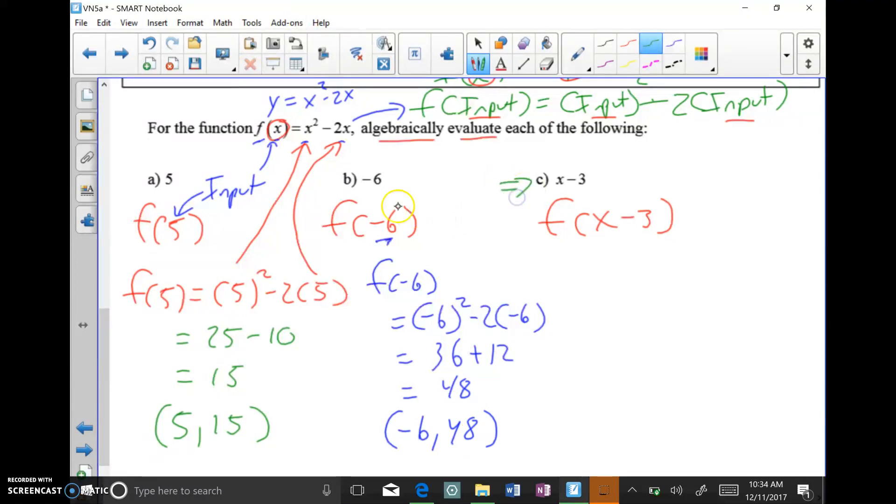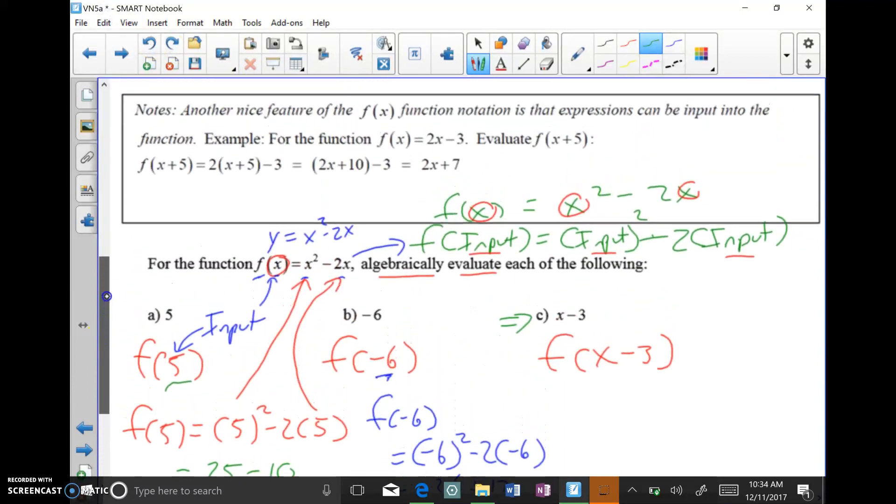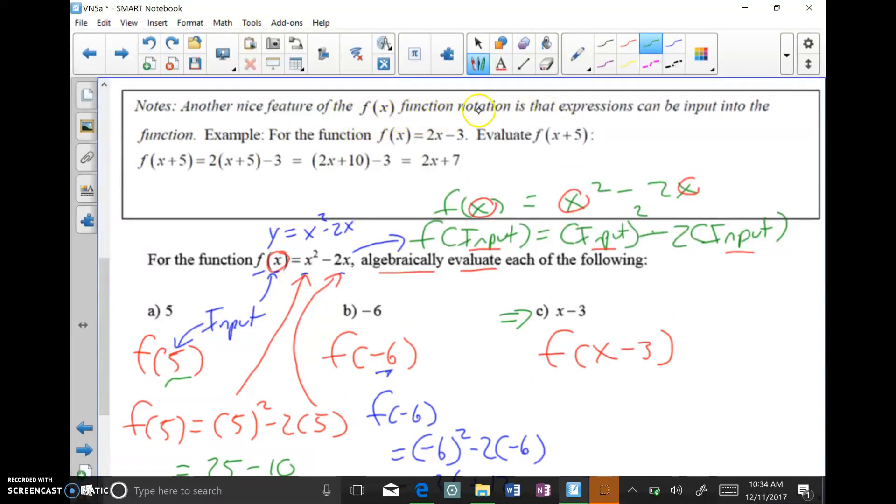And for the last example here, notice I'm just plugging in a number, plugging in a number. Well, here I'm plugging in an expression. And that's a little bit more advanced, and that was this box of notes that I skipped. So another nice feature of the f of x notation is that expressions can be inputted into the function. For example, we could do f of x plus 5, so you could plug in a whole thing. And remember, it's all about x is replaced by whatever I plug in. Here x was replaced with 5, all the x's were replaced with 5, all the x's were replaced with negative 6.